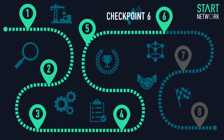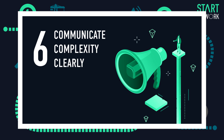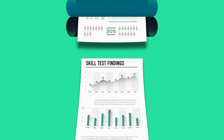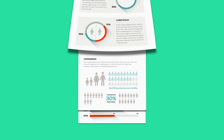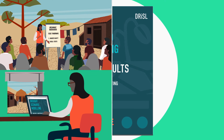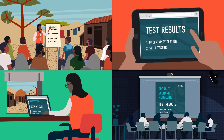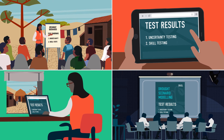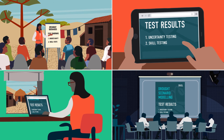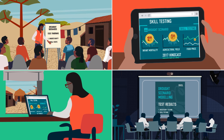Checkpoint 6: once a measure of uncertainty and skill has been identified, it must be communicated in a simple and logical way to ensure that all stakeholders are aware of the findings. This should include the model's strengths and limitations.